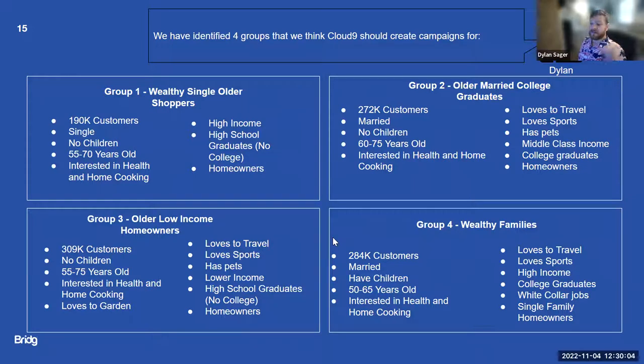Group one tends to be wealthy single older shoppers. They over index on income, they had a very high income actually. They were high school graduates with no college degrees, homeowners interested in health and home cooking. 55 to 70 years old and no children in the household. It's hard to interpret. I think I'm interpreting a lot of these no children as maybe they've left the household, because they tend to be in the 55, 60, 75 age range.